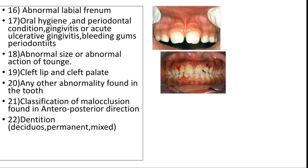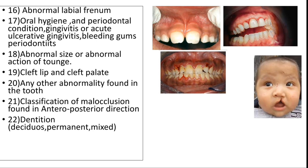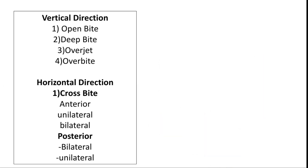Next we look for abnormal labial frenum, and oral hygiene including periodontal conditions such as gingivitis, acute ulcerative gingivitis, bleeding gums, and periodontitis. We also note any abnormal size or abnormal action of the tongue, and any other abnormality found in the mouth.